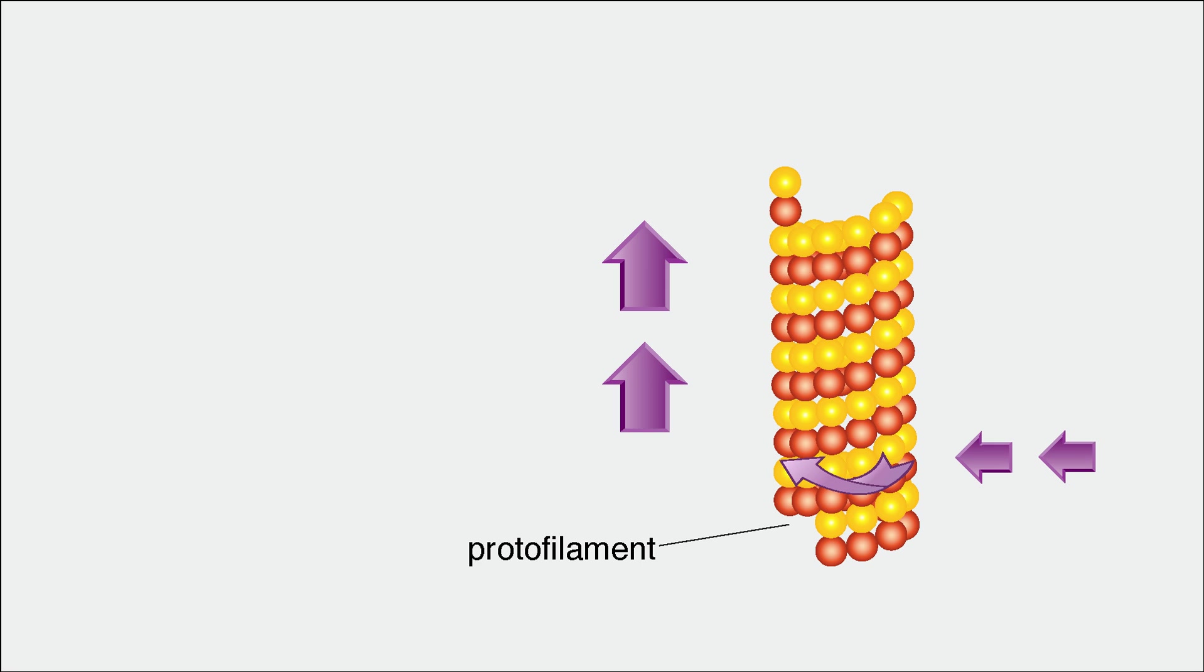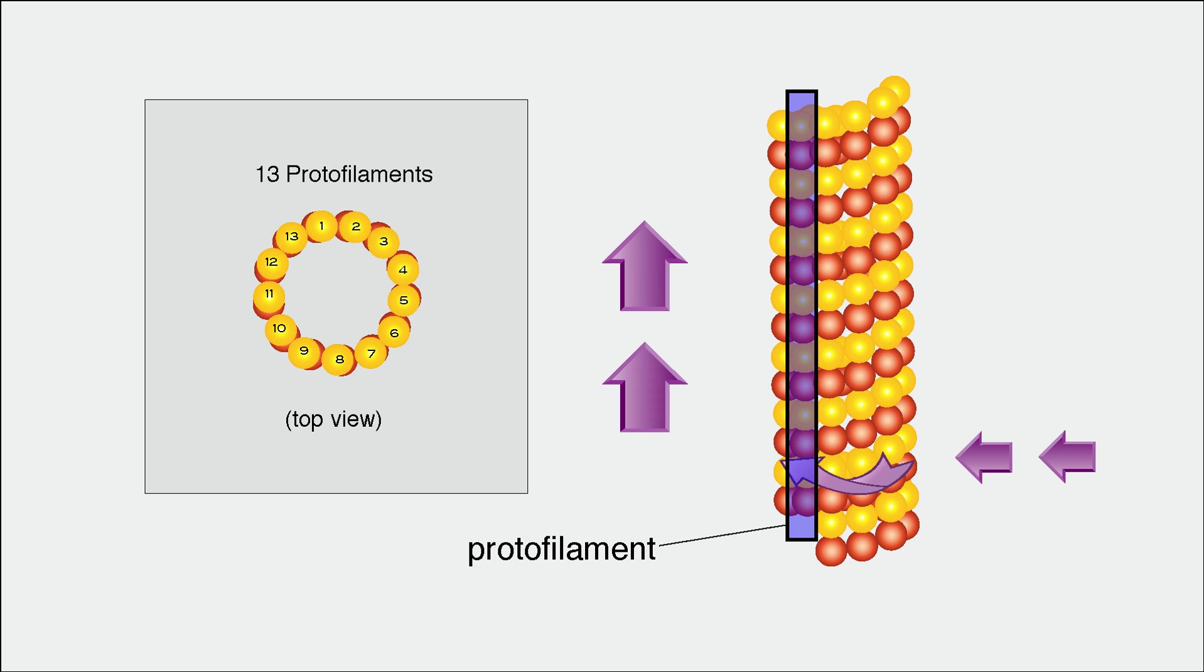While each additional dimer is added to the side of the previous one to continue the spiral, beta tubulin heads and alpha tubulin tails also associate in linear columns called protofilaments. Microtubules generally have 13 protofilaments surrounding a hollow core.